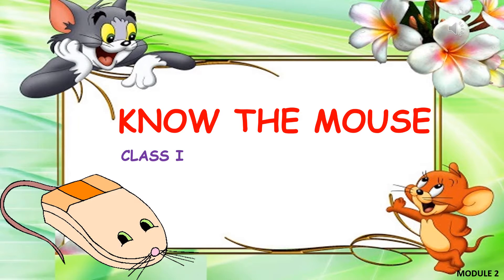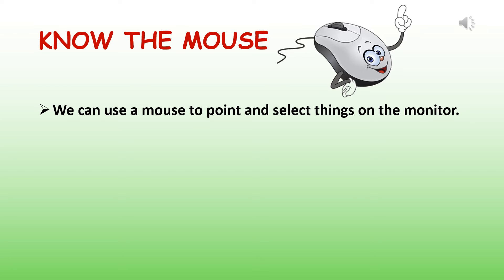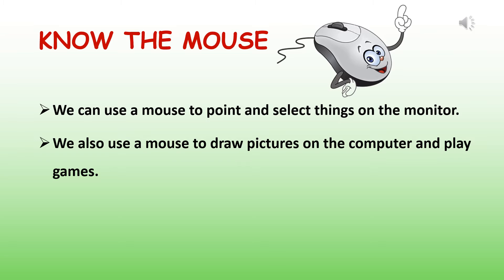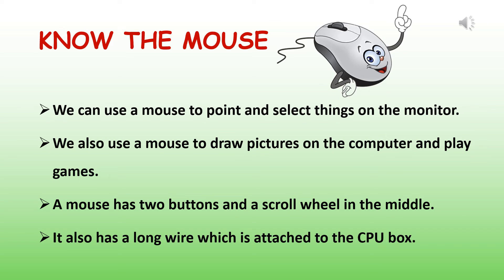Good morning children, welcome back to your computer class. In the last class we started with the chapter 'Know the Mouse'. We understood that the mouse can be used to point and select things on the monitor, draw pictures on the computer, and play games. We identified that the mouse has two buttons — the left and right mouse button — with a scroll wheel in the middle. Today let us learn a little bit further about the mouse.